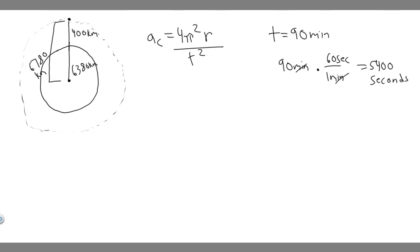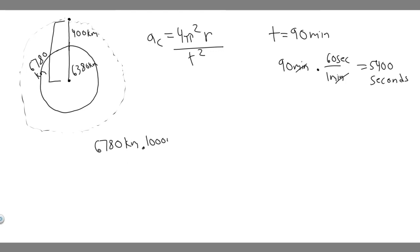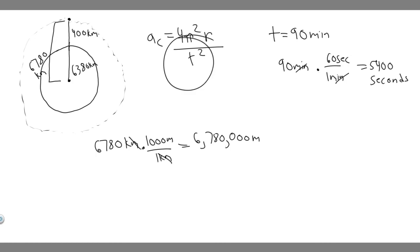Now we need to convert the radius, 6,780 kilometers, to meters. There are 1,000 meters for every one kilometer, so multiplying by 1,000 gives us 6,780,000 meters. That's our new radius. Now we have both the radius and the time, so we can plug everything in and solve.